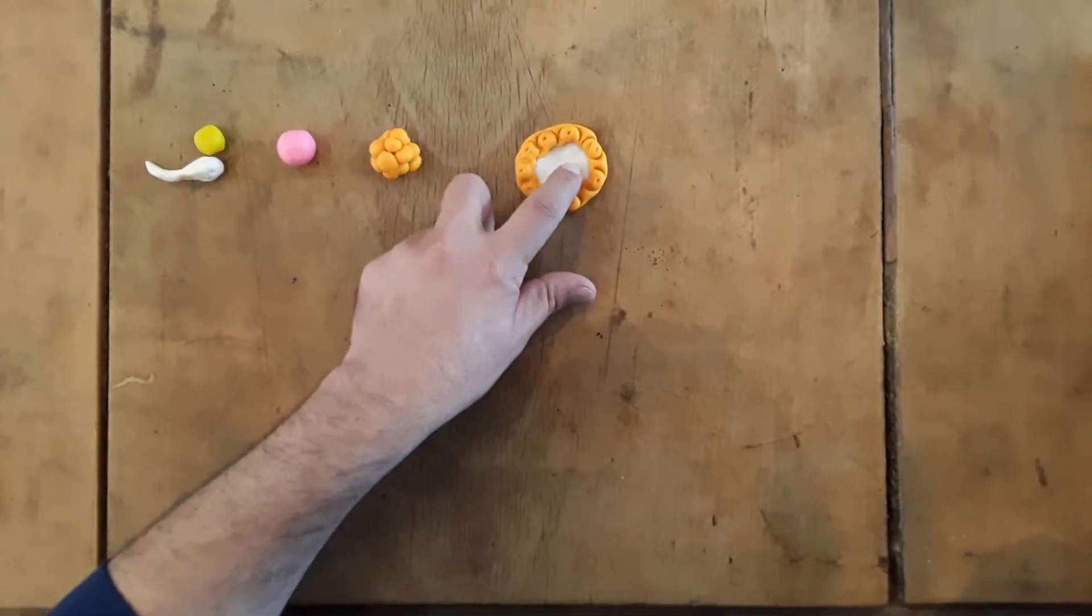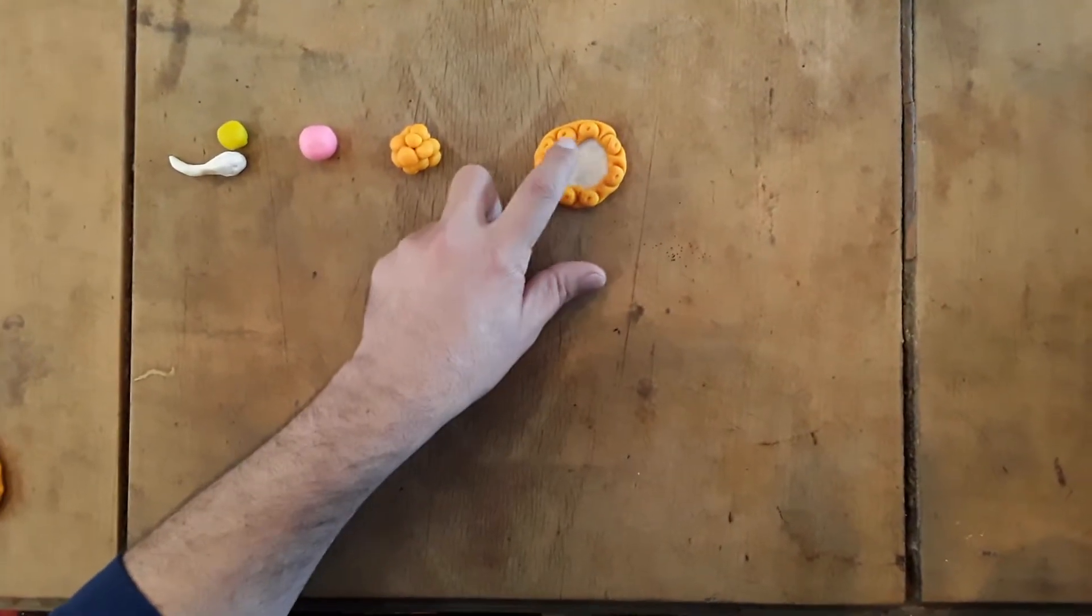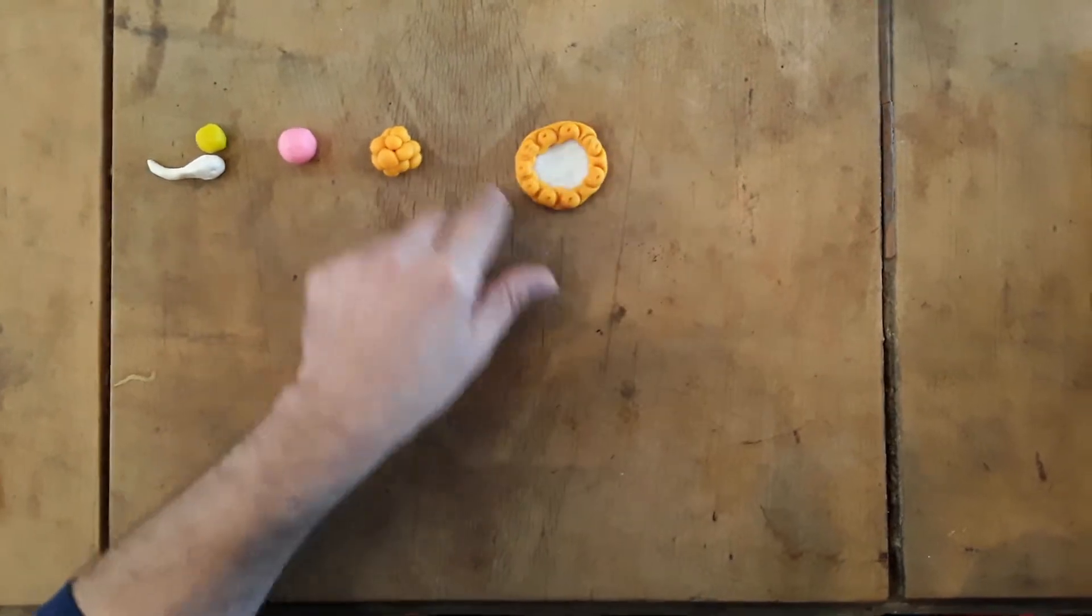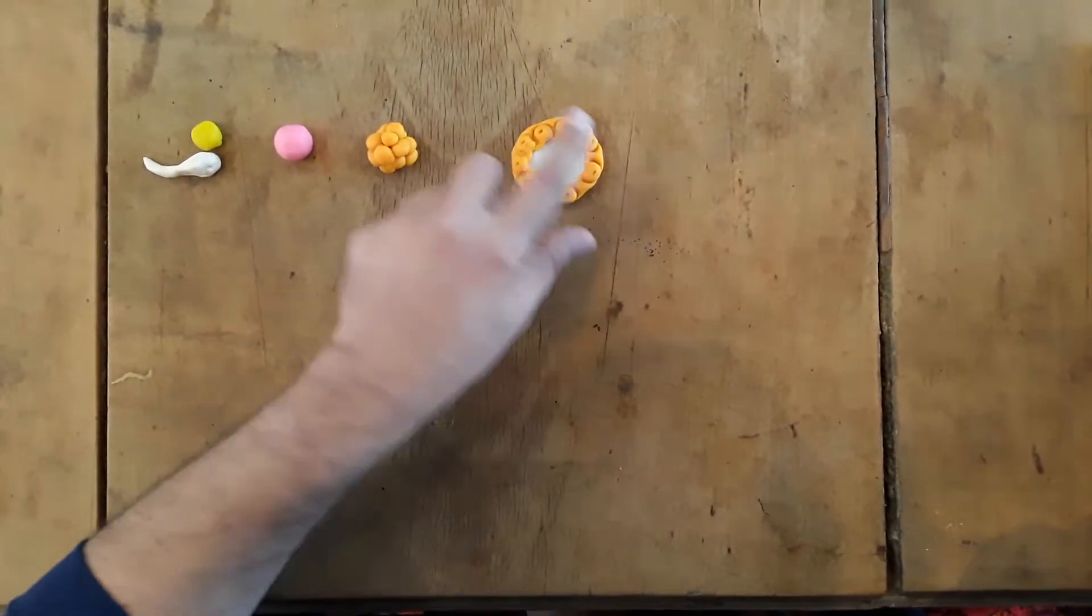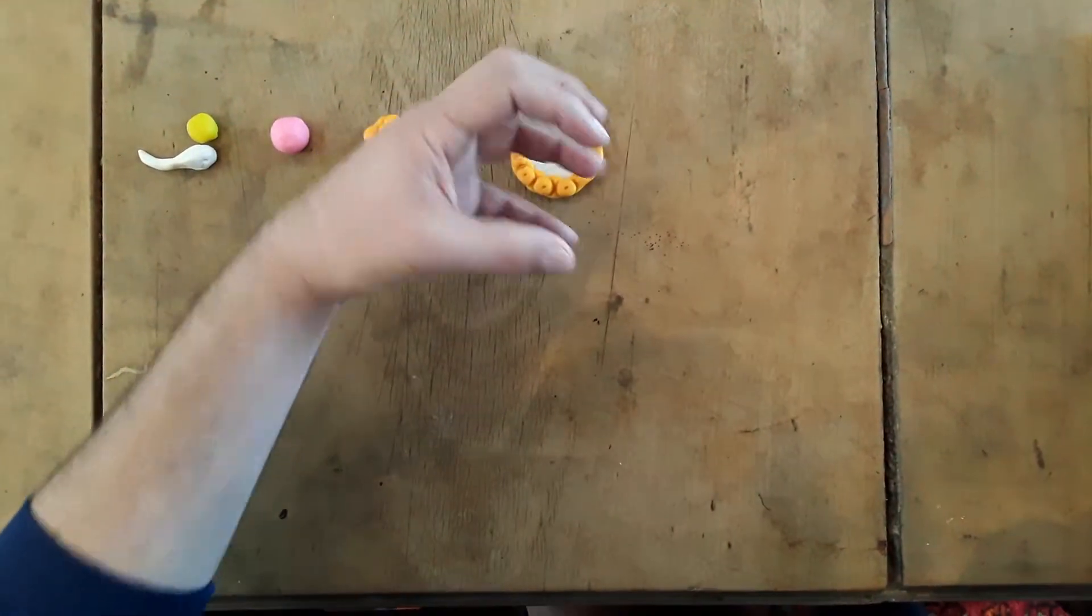Inside we're going to have the blastocoel, which is just a hollow area. The whole thing is called a blastula - just a bunch of cells in a hollow ball form.